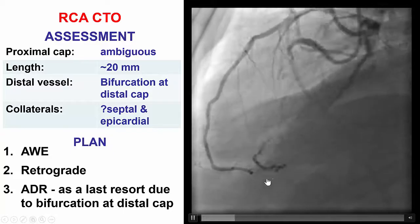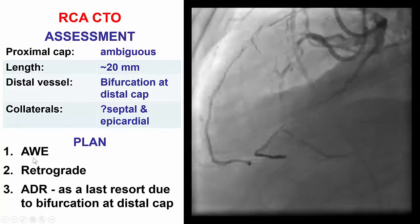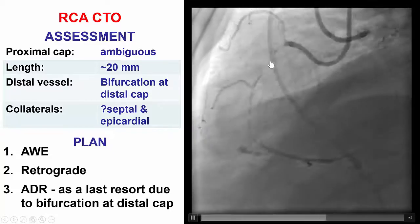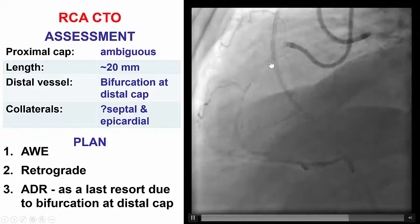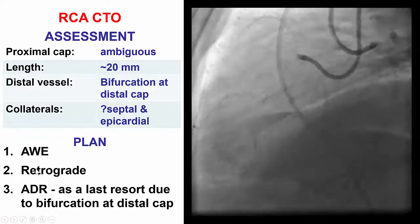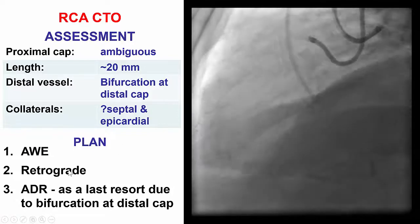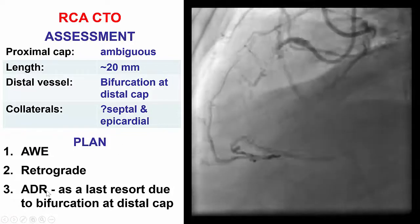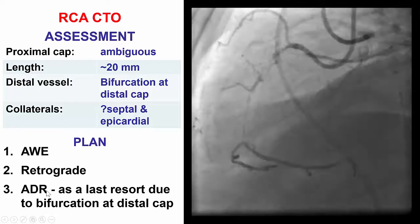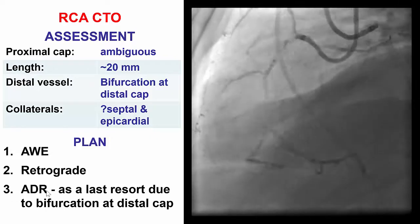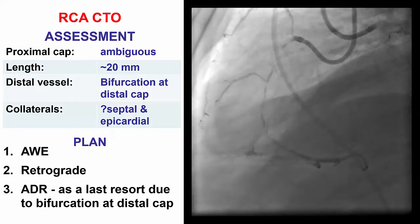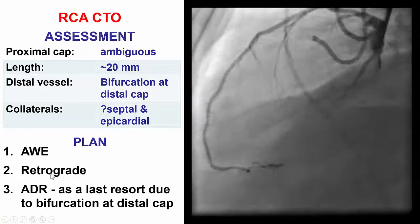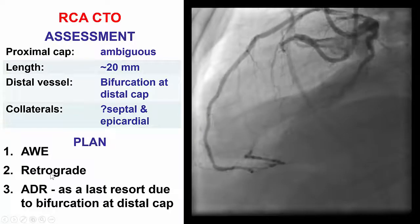Our plan was to start with antegrade wire escalation to see if we could resolve the proximal cap ambiguity. If it didn't work, we would try retrograde, and then use antegrade dissection and reentry only as a last resort if we were unable to cross antegrade or with the retrograde approach.